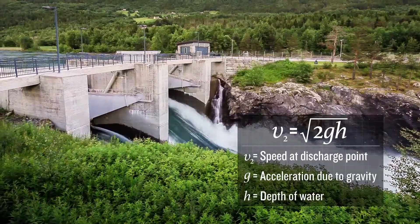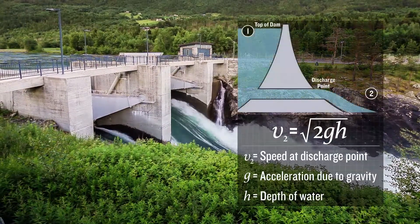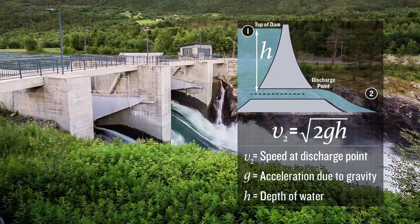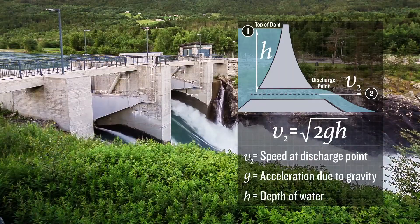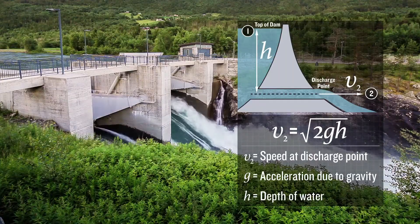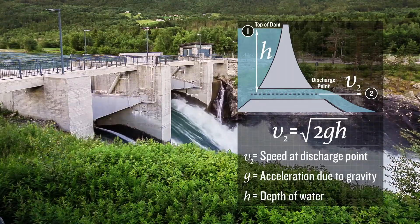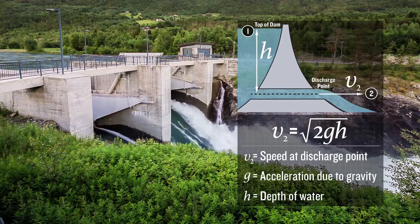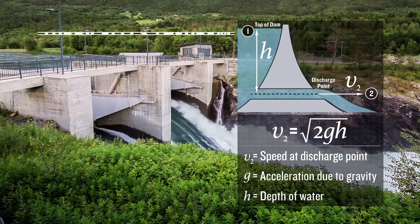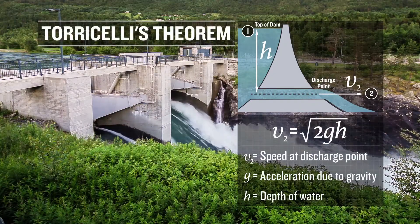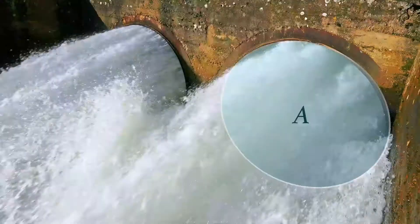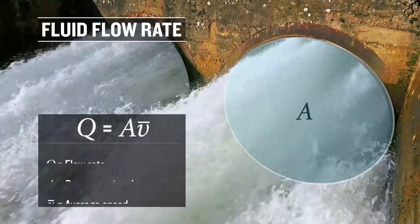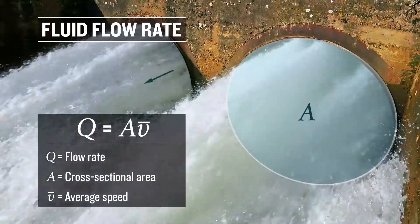Since the pressure at the top of the dam and at the discharge point are very nearly the same atmospheric pressure, and the density of the water remains essentially constant, Bernoulli's equation reduces to what is known as Torricelli's theorem. The fluid flow rate, which represents the volume of water flowing past a specific location during a unit period of time, can be computed from this.